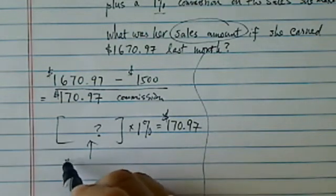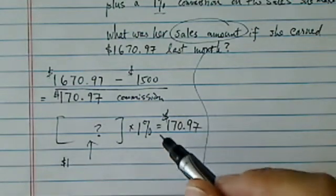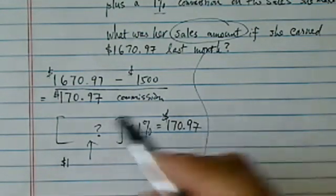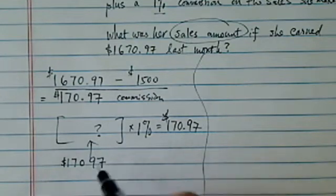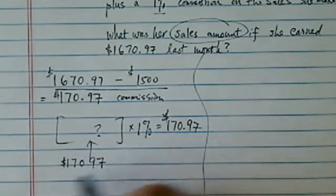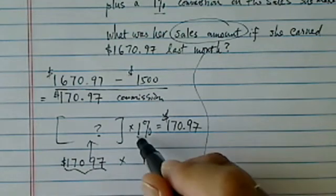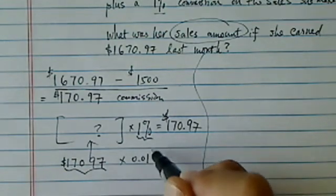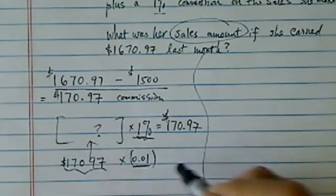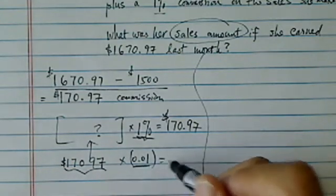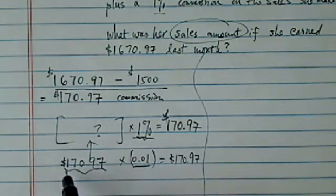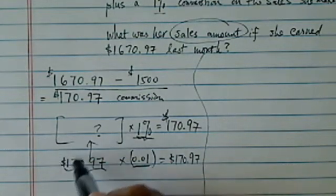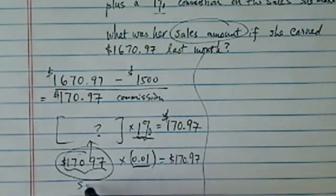If she made $100, then she'll have $1. So basically what I'm trying to impress on you is she made $170.97 because this number times 1%, which is 0.01 in decimal. Percent to decimal, this one is equal to $17,097.